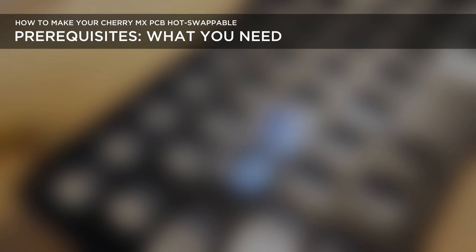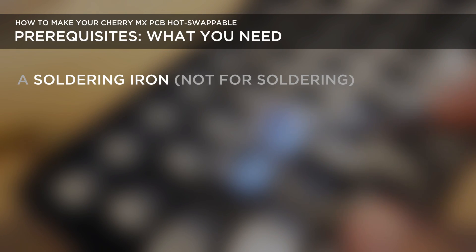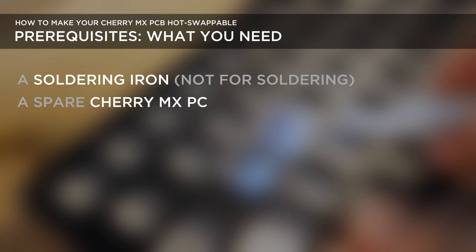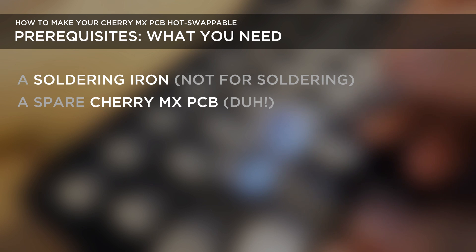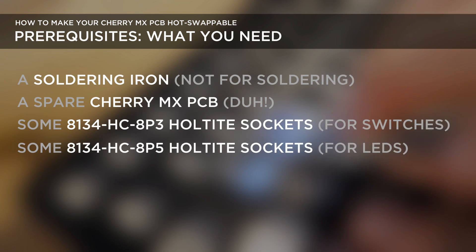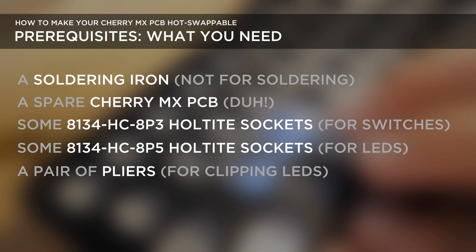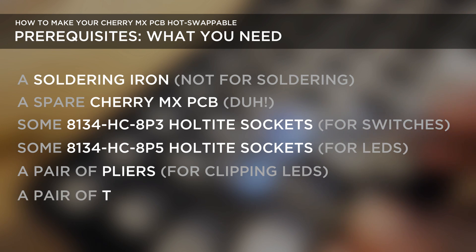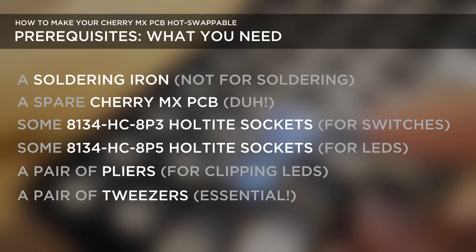Alright, so here's what you're going to need. You're going to need a soldering iron, ironically not for soldering but we'll get into that. You need a Cherry MX PCB of course, and then you need those little tiny hot tight sockets which I'm going to talk about in a second. If you want to install LEDs you need a pair of pliers and also a pair of tweezers for installation, and this is really critical.